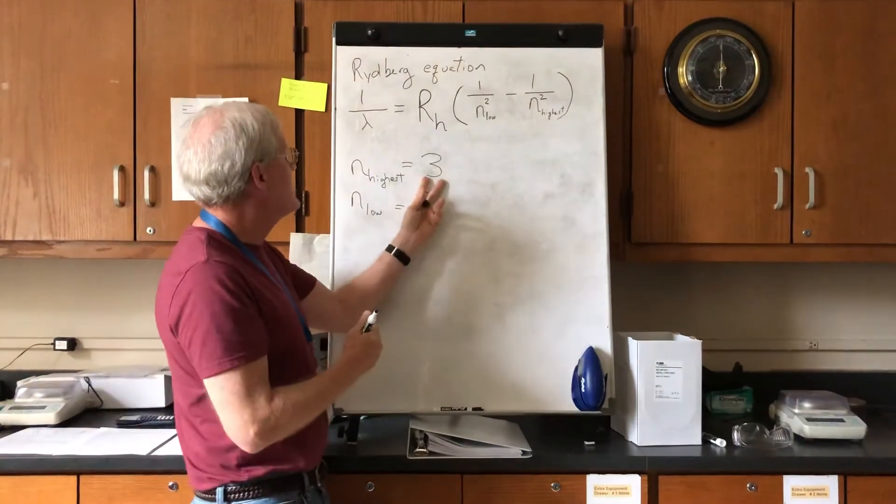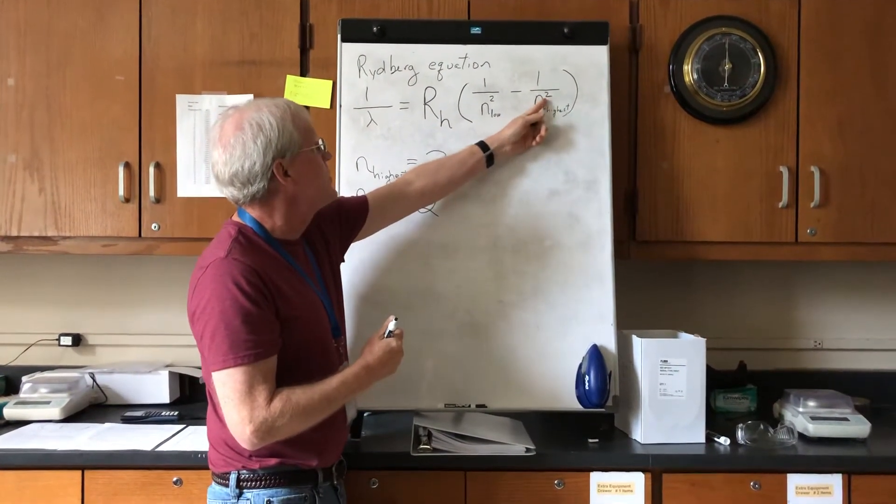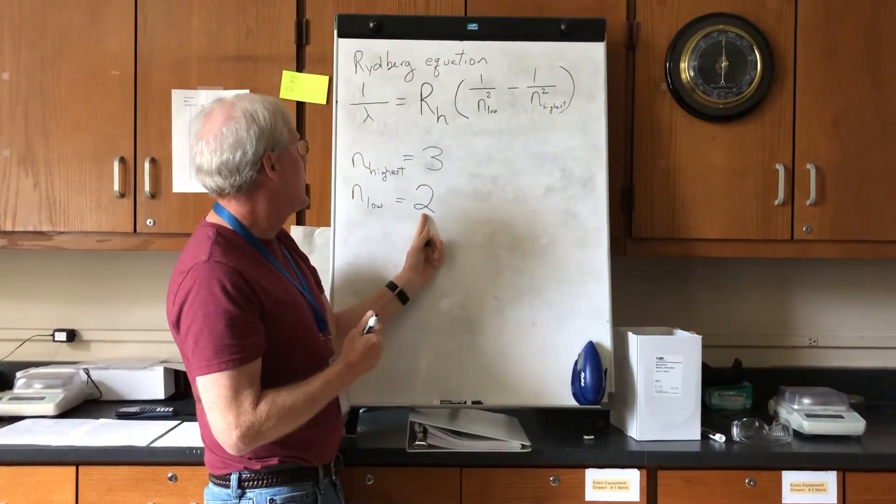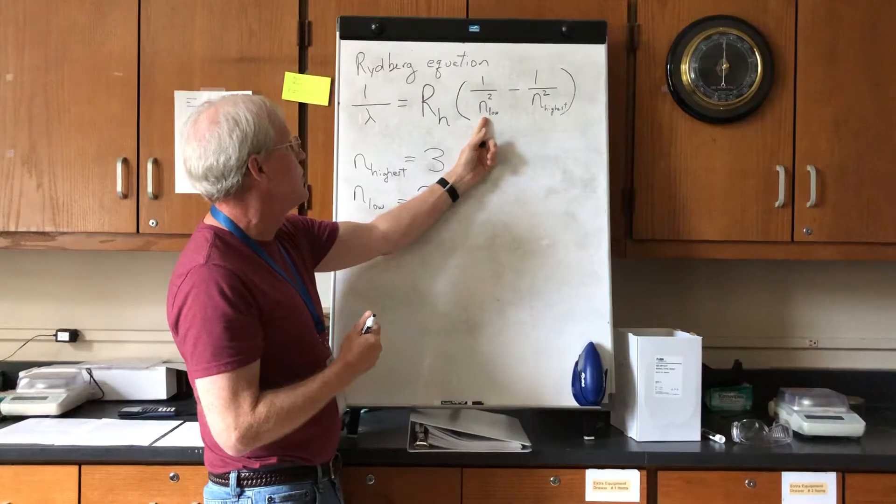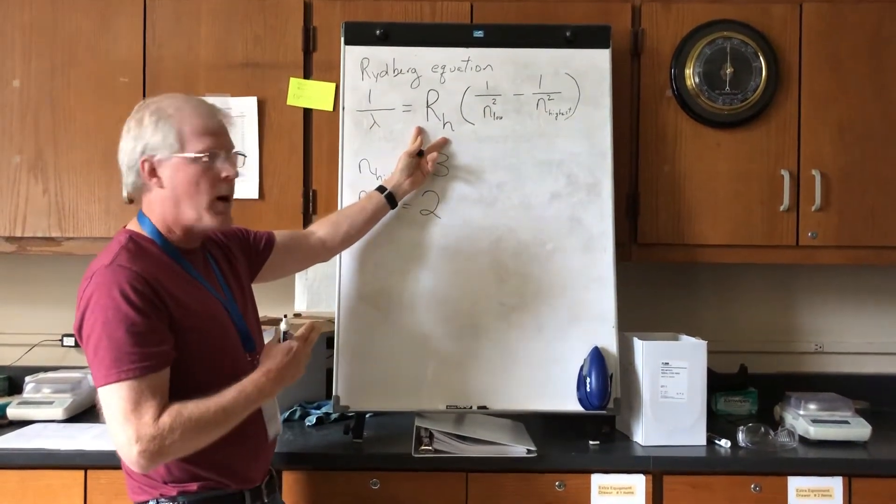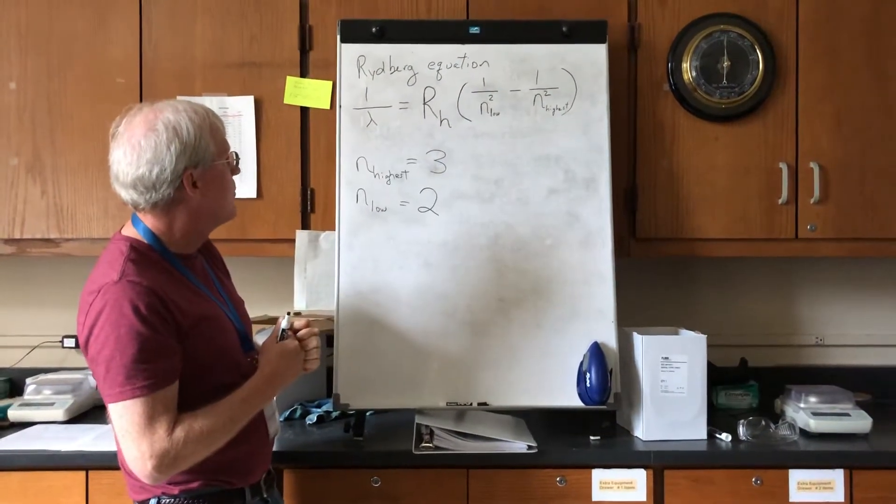I'll plug this value in for the highest energy level and you'll see that it's squared. I'll take this value and plug it in for the lowest energy value and you'll see that it's squared. Along with that, I'll plug in the value of the Rydberg constant and then we'll be able to calculate the wavelength of light from that.